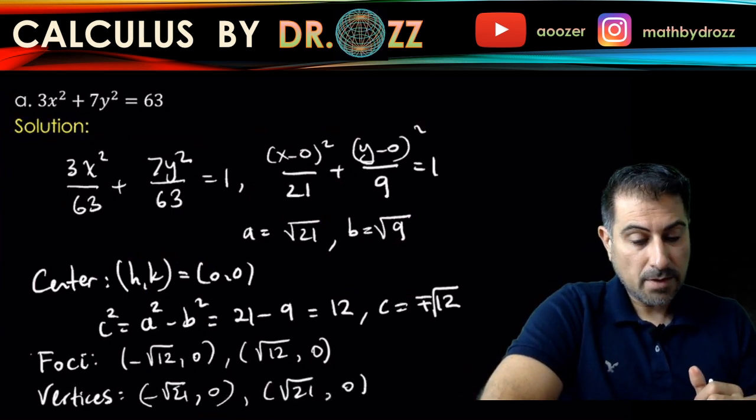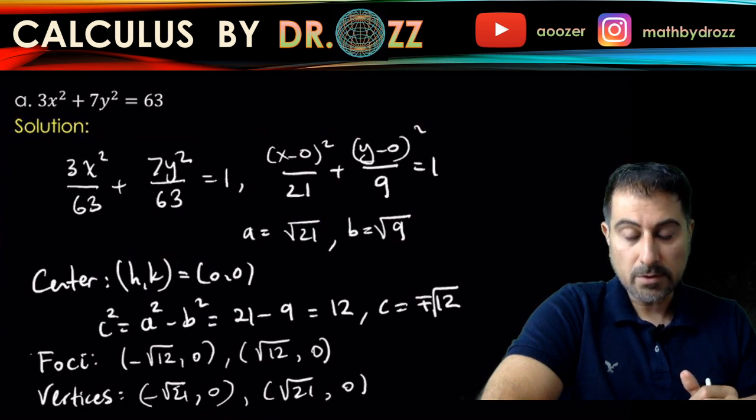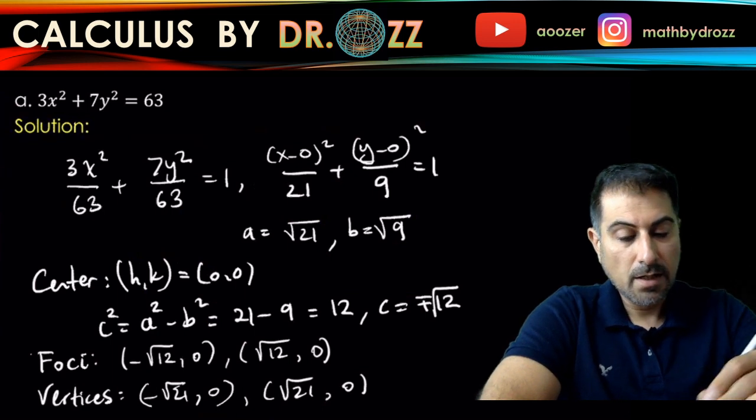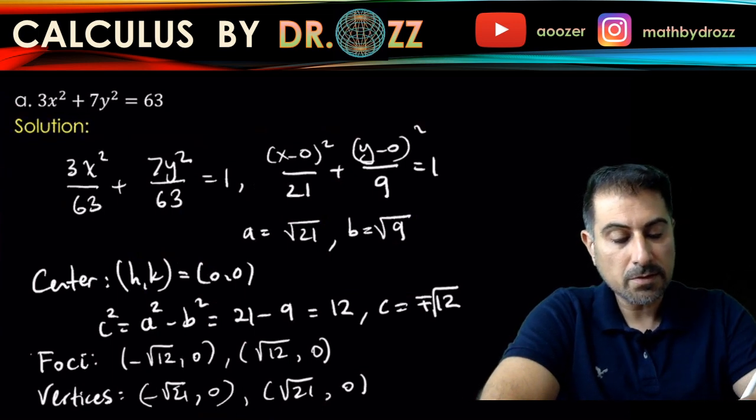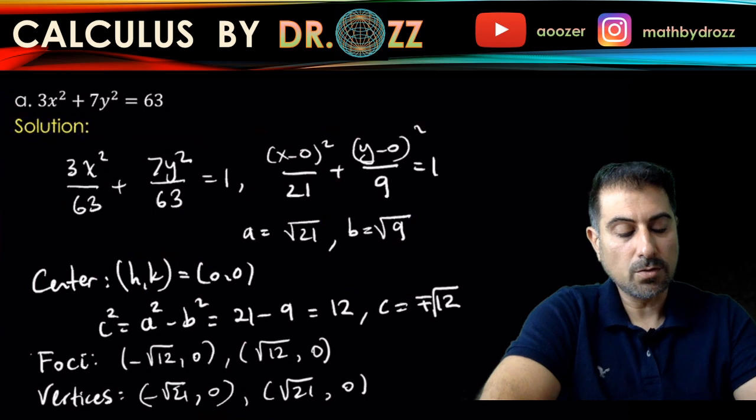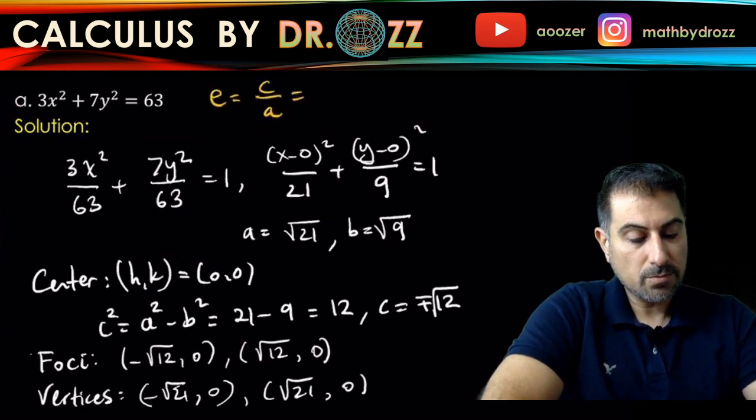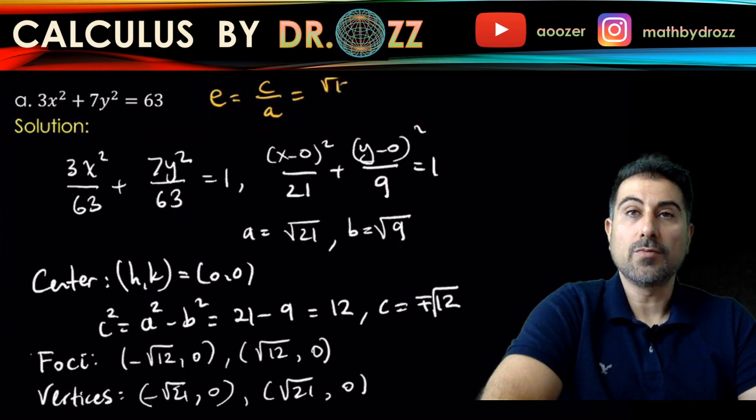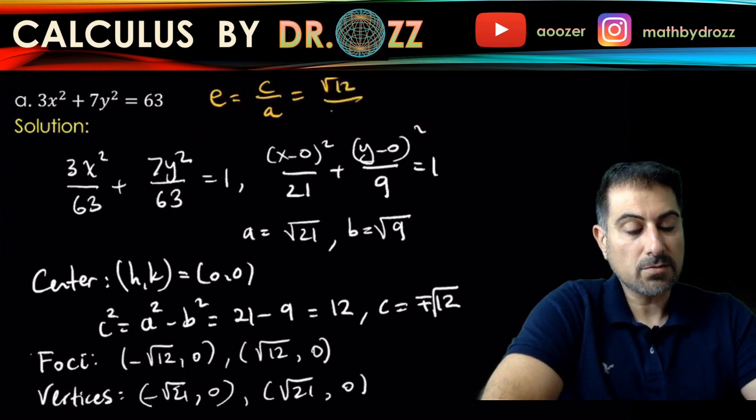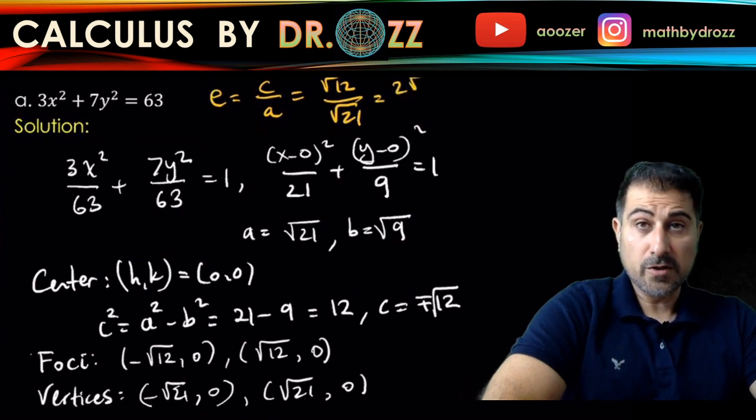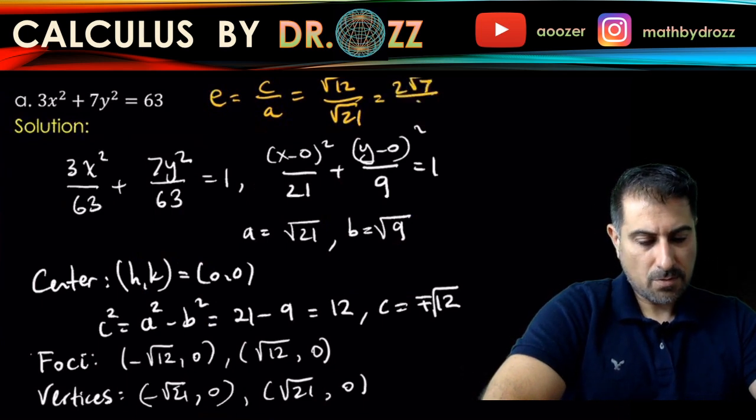Okay. And as I told you, as I showed you earlier, we have the eccentricity coming out of the ratio of C over A. I'll just write this down here. E equals C over A and C equals square root of 12, A equals radical 21. And if you simplify this out, this is 2 radical 7 over 7. Okay.